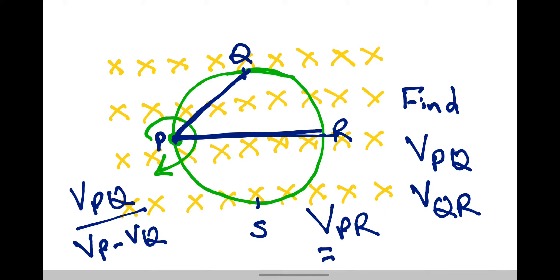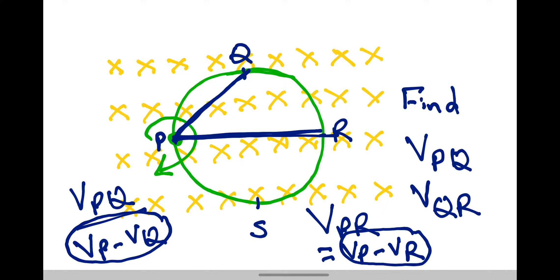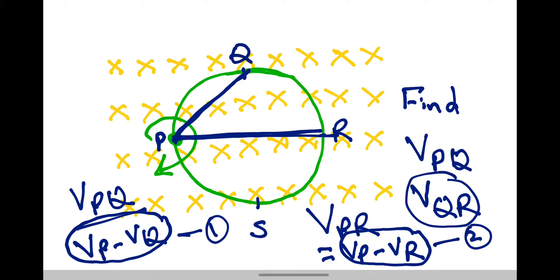VPR equals VP minus VR. So we have two equations: equation 1 gives VP minus VQ, and equation 2 gives VP minus VR. To find VQR, subtract equation 1 from equation 2. Doing 2 minus 1 gives: minus VR plus VQ, which is VQ minus VR.